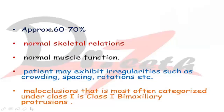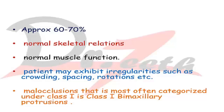This type of malocclusion is seen in 60 to 70 percent of all malocclusions. The features are: they have normal skeletal relationships, normal muscle function, but may exhibit irregularities such as crowding, spacing, rotations, or teeth not in their proper position. This is also known as intra-arch malocclusion. They can be single-tooth or multiple-tooth malocclusions.